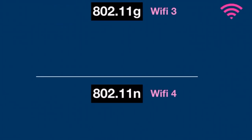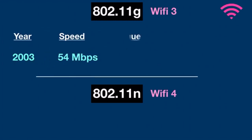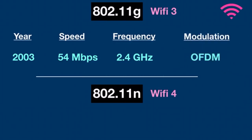802.11g was designed in 2003. It upgraded the speed up to 54 Mbps while retaining usage of the reliable 2.4 GHz band. This resulted in the widespread adoption of the standard. It was also based on OFDM.